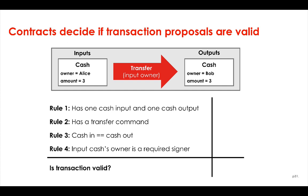We can run through this contract with an example transaction proposal and check whether it meets our contract rules. If we look at this transaction, we can see that it has one cash input and one cash output, so that's fine. We can see that it has a transfer command, so that's fine. We can see that the value of the cash inputs equals the value of the cash outputs, so that's fine. And finally we can see that the owner of the input cash is a required signer. So this transaction proposal meets all the contract rules, and we can consider it valid.